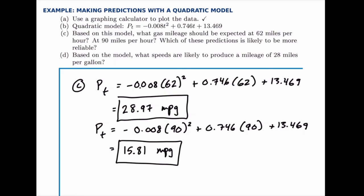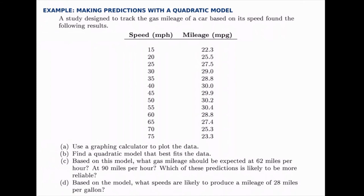We can make our prediction for each speed: about 30 miles per gallon and about 16 miles per gallon. Then the question asks which of these predictions is likely to be more reliable. In general, the first one is likely to be more reliable because if you look at the data, a speed of 62 miles per hour fits within the range of speeds that we know about, speeds that we've measured. The 90 miles per hour is outside of that range - it would be way up here and it's not something that we've measured.